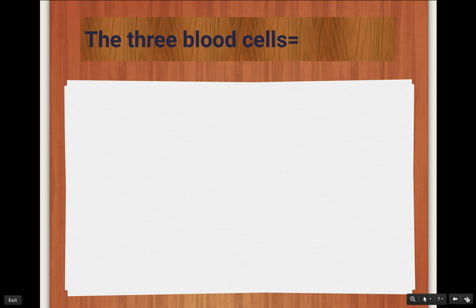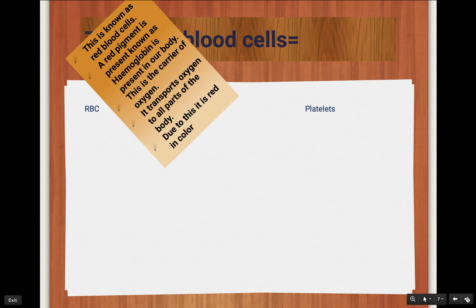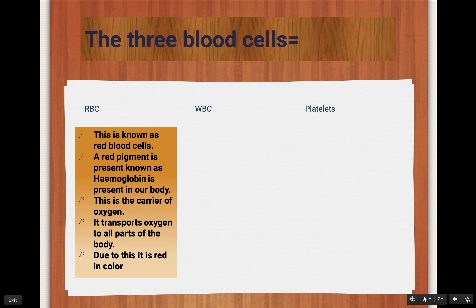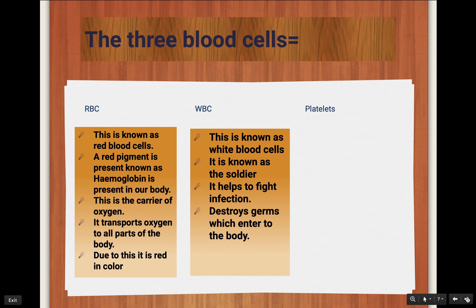There are three types of blood cells inside the plasma: RBC, WBC, and platelets. RBC stands for red blood cells. A red color pigment present inside the RBC is known as hemoglobin. Hemoglobin is the carrier of oxygen, which is why oxygen is transported to all parts of the body. Hemoglobin also gives the red color to RBC. WBC stands for white blood cells — they are the soldiers of our body, protecting it from infections and destroying germs.